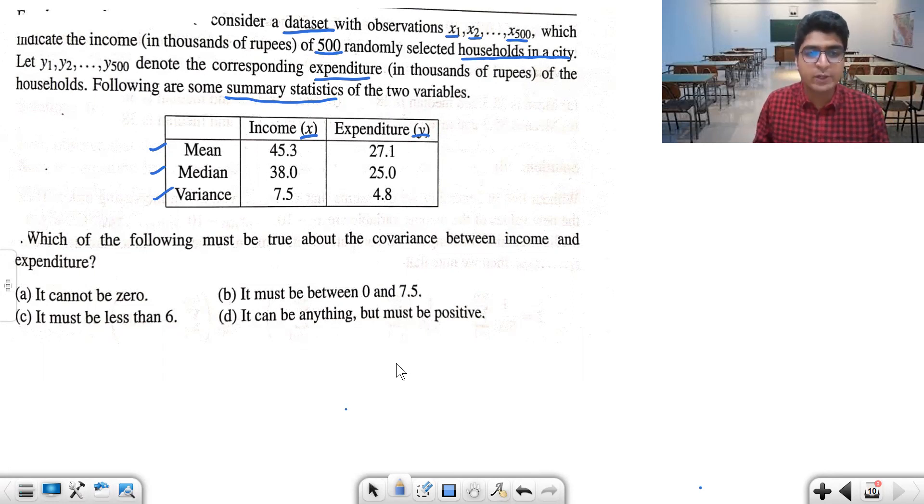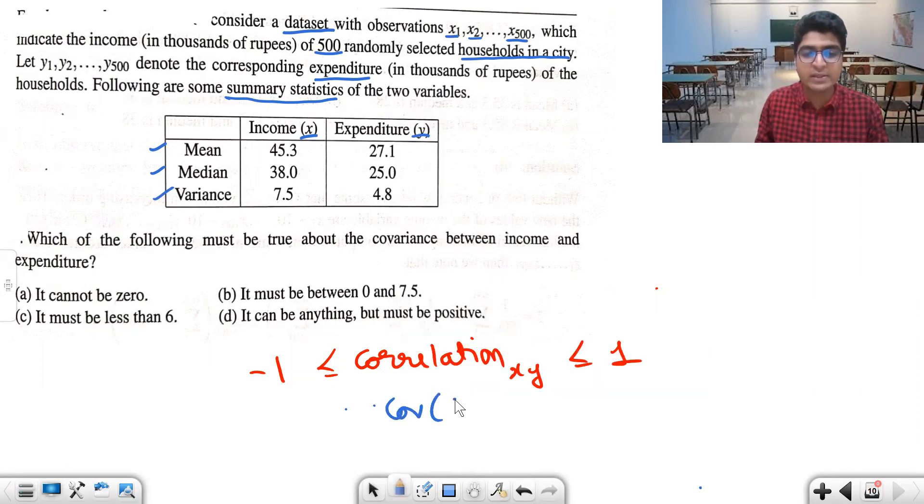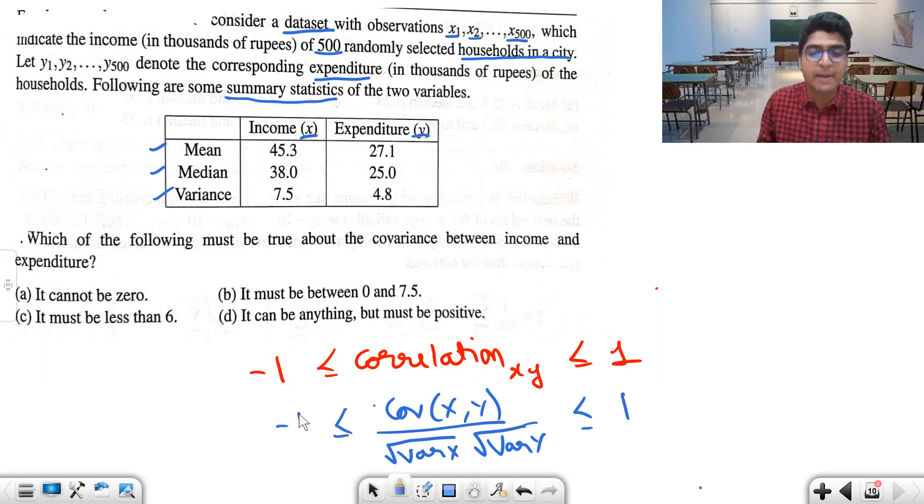How would we solve this? We know that the correlation between these two variables X and Y will definitely be between minus one and one. Correlation can be written as covariance between X and Y upon square root of variance of X times square root of variance of Y. This must be between minus one and one.